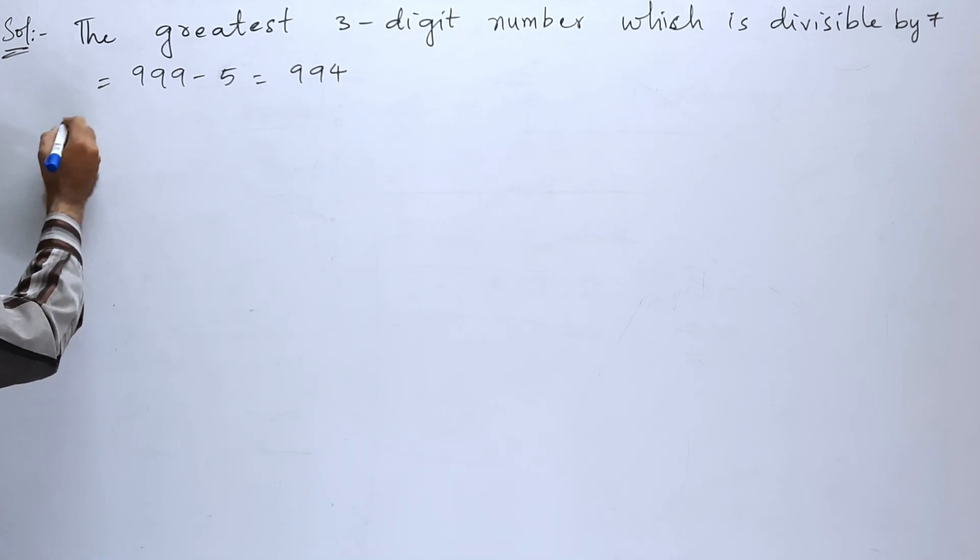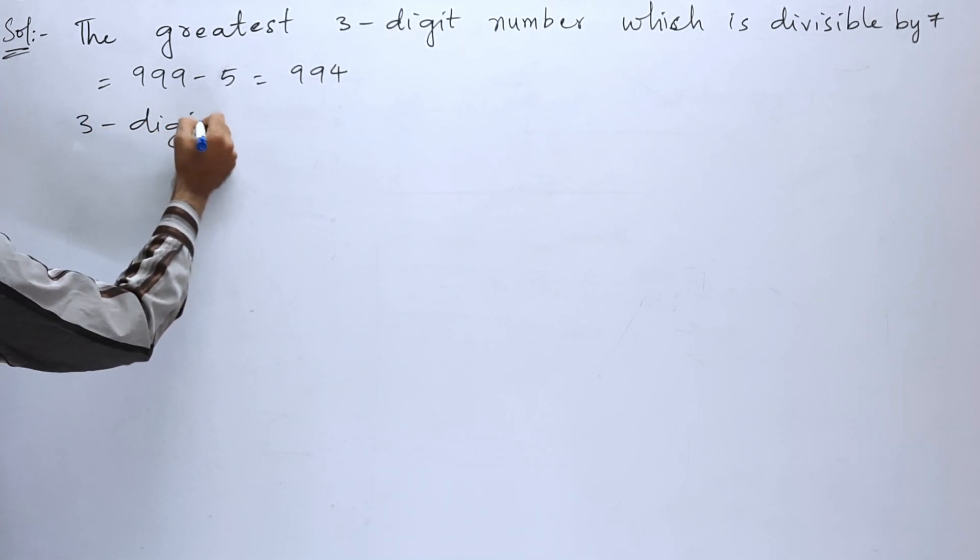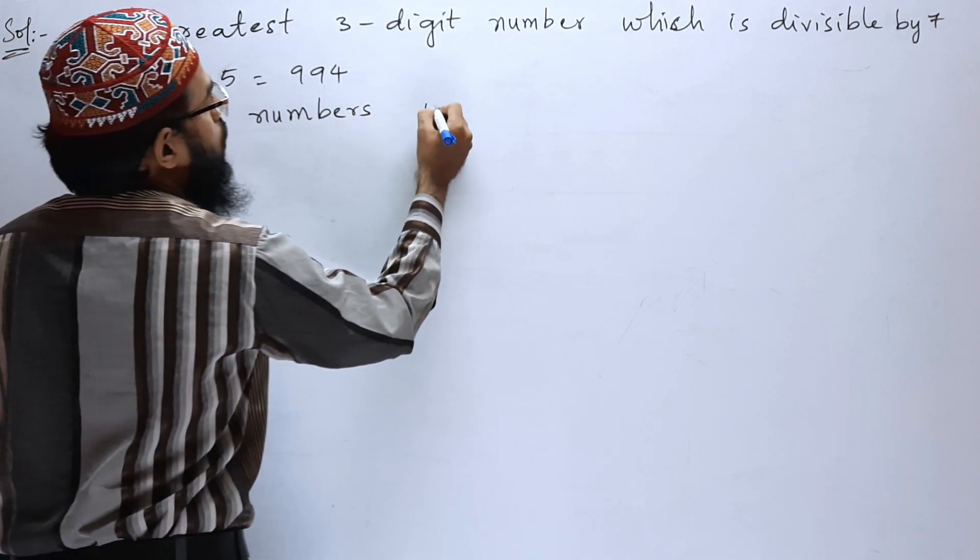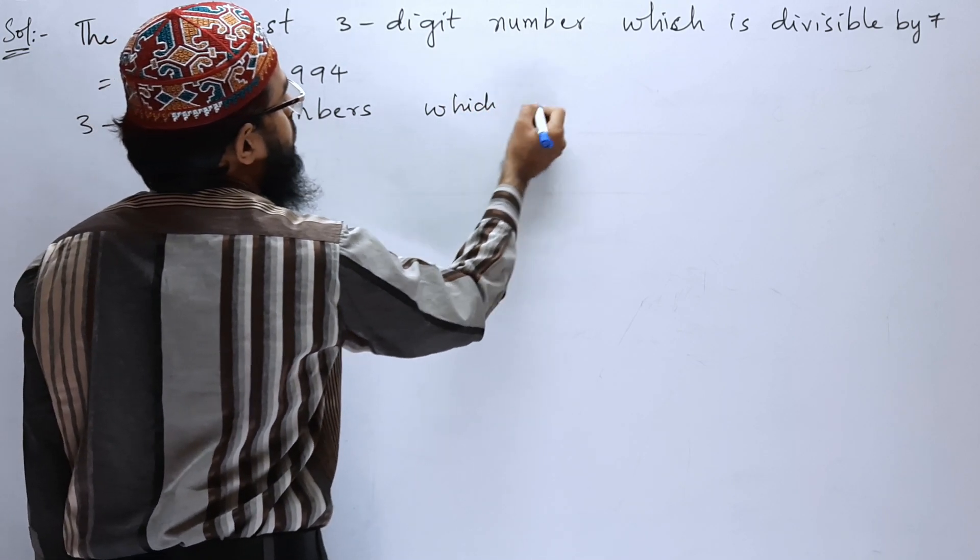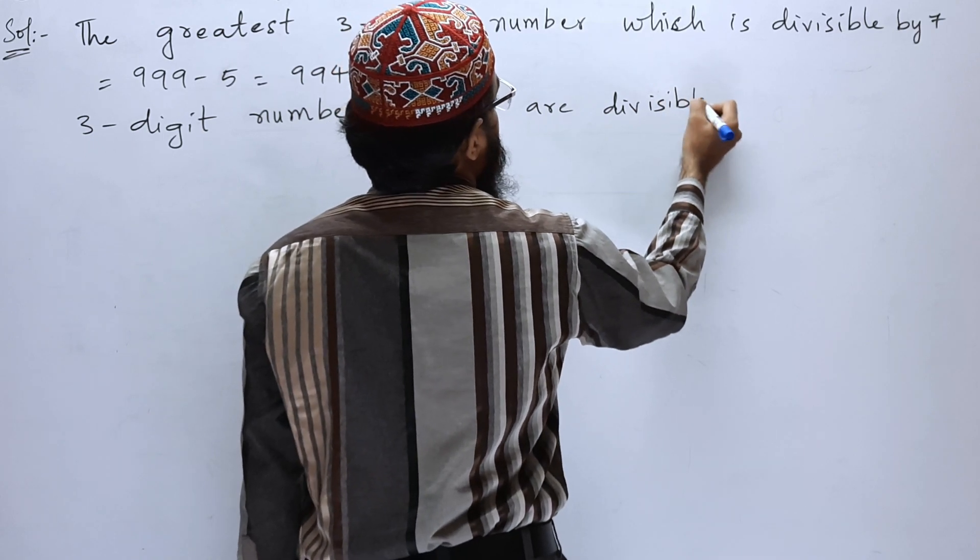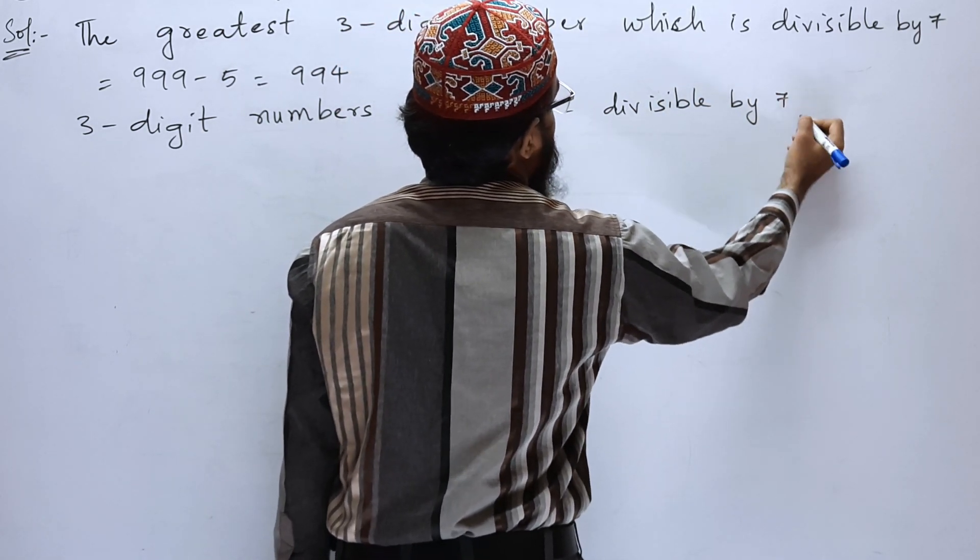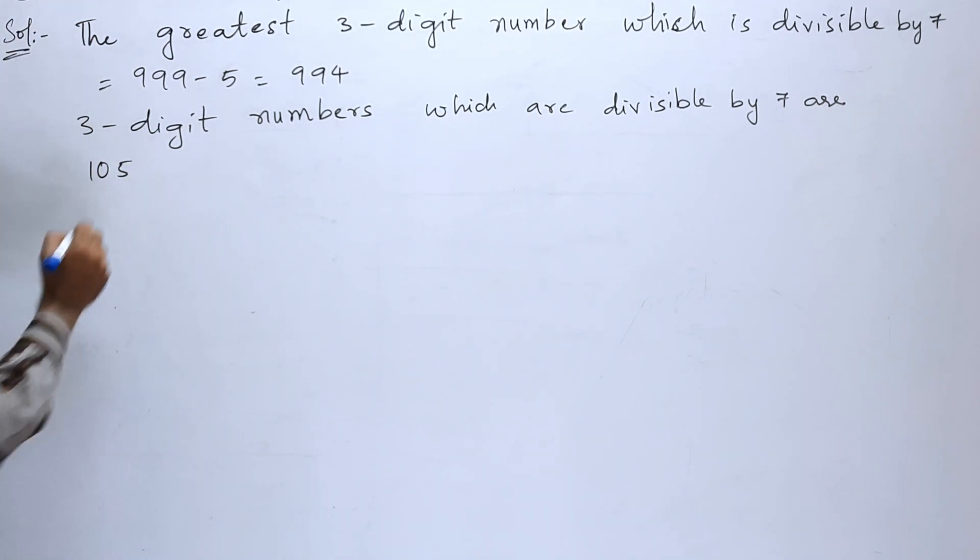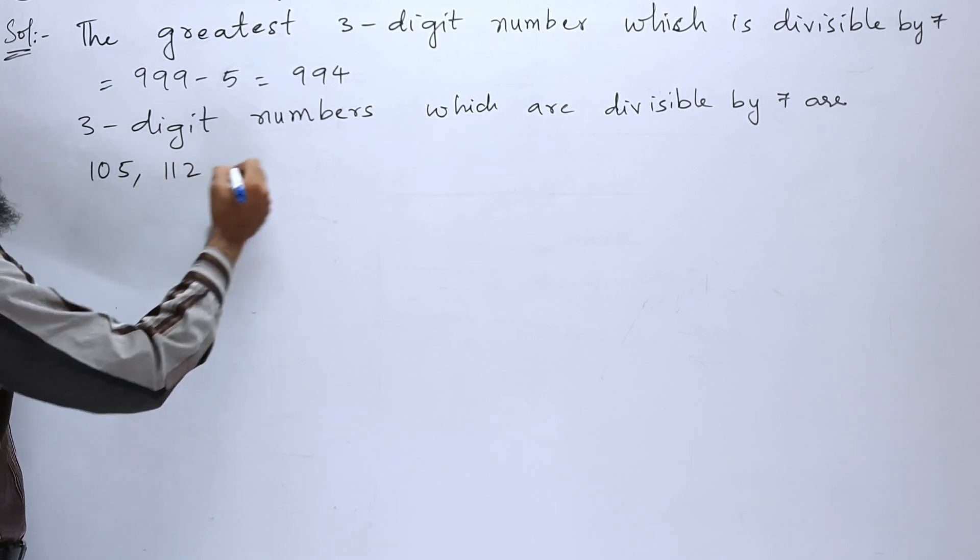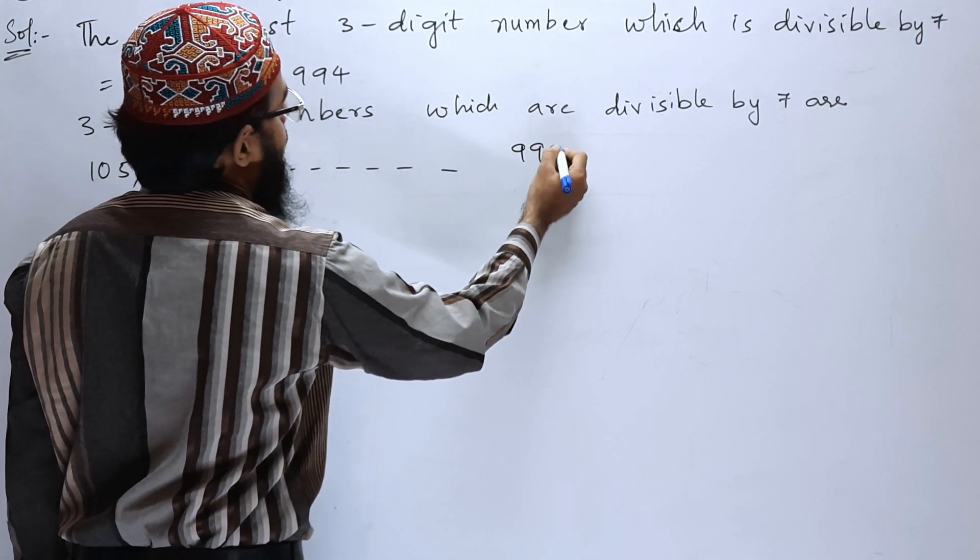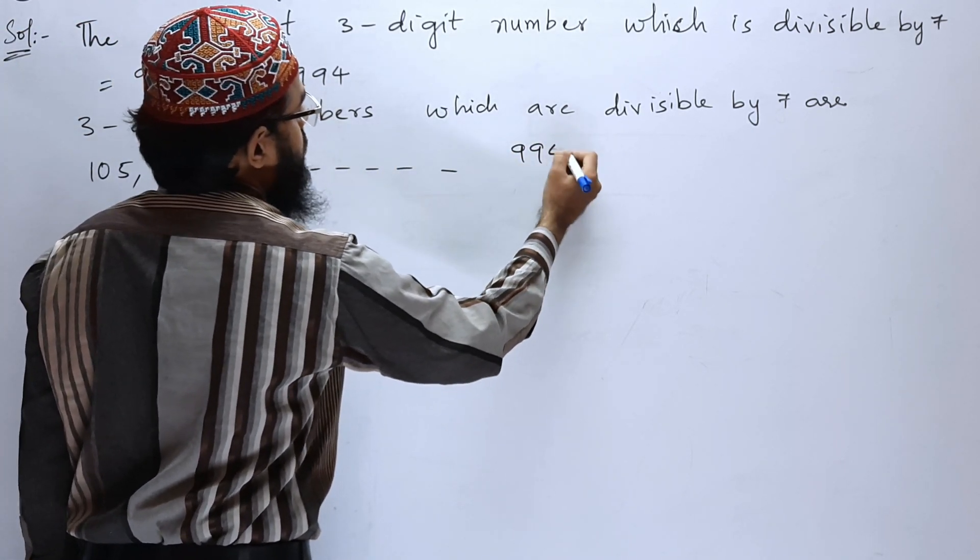Now, next we can write: 3-digit numbers which are divisible by 7 are 105, the first number is 105, plus 7 is 112, plus 7 is 119, and so on. The last number is 994.